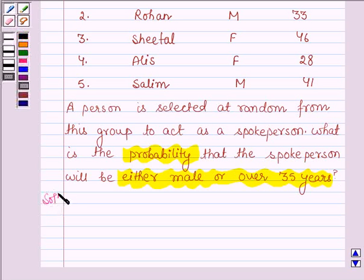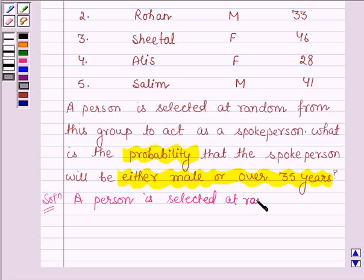So let's start with the solution. Here we are given that a person is selected at random from a group of five.